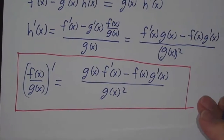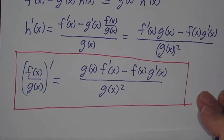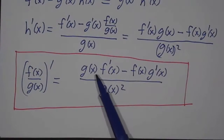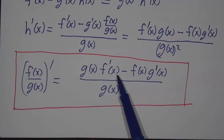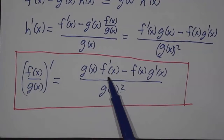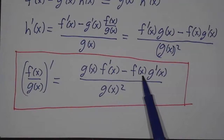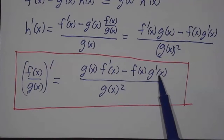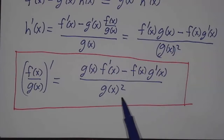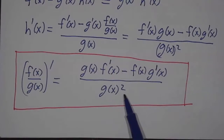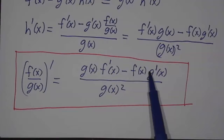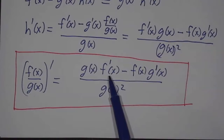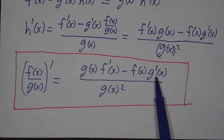The derivative of f over g is the denominator times the derivative of the numerator, minus the numerator times the derivative of the denominator, over the denominator squared. And unlike the product rule, the order matters — the f prime term is positive, the g prime term is negative.